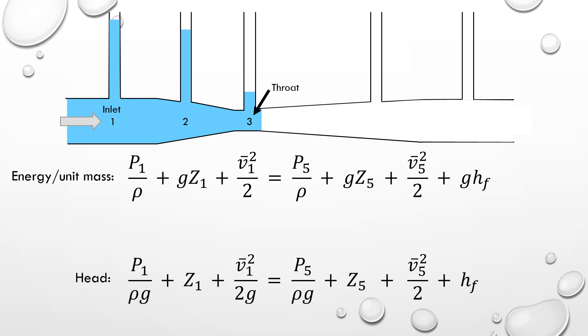Next, let's apply the energy balance between the inlet and outlet of the venturi meter. The diameter at these two points is equal. Therefore, due to mass conservation, we know that the velocity must also be equal.